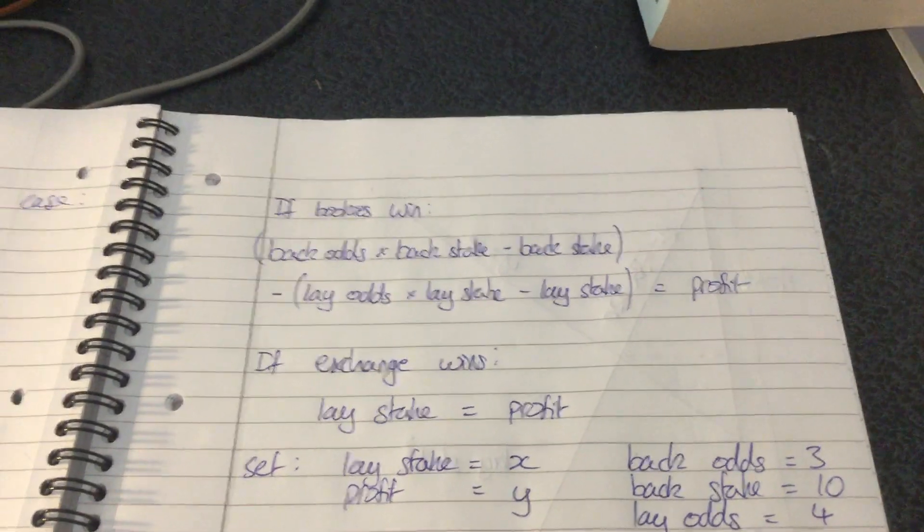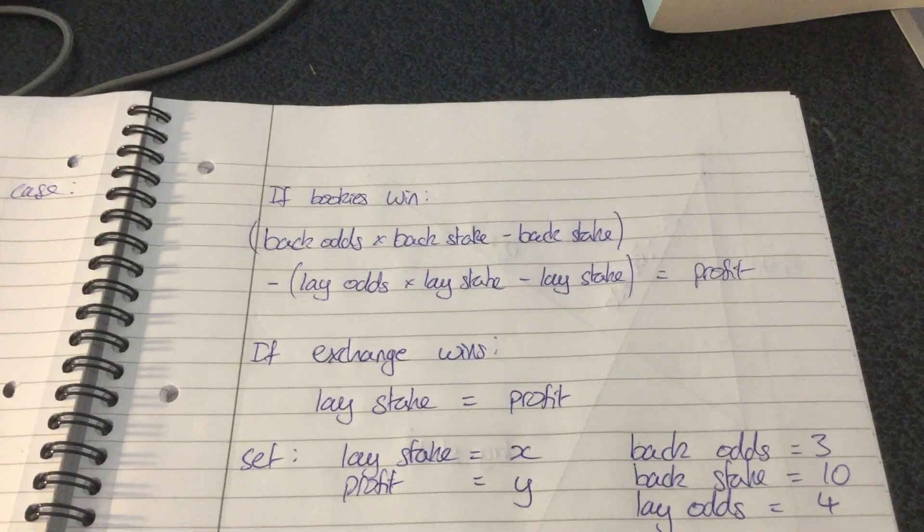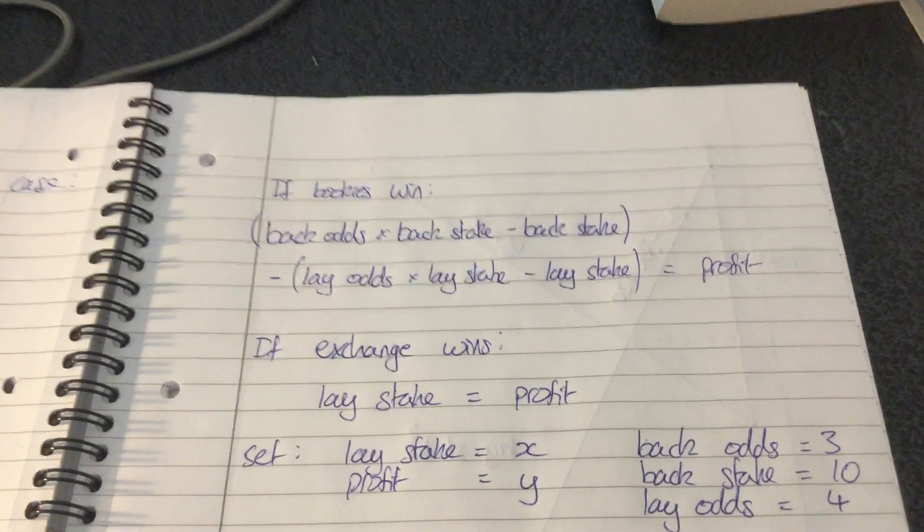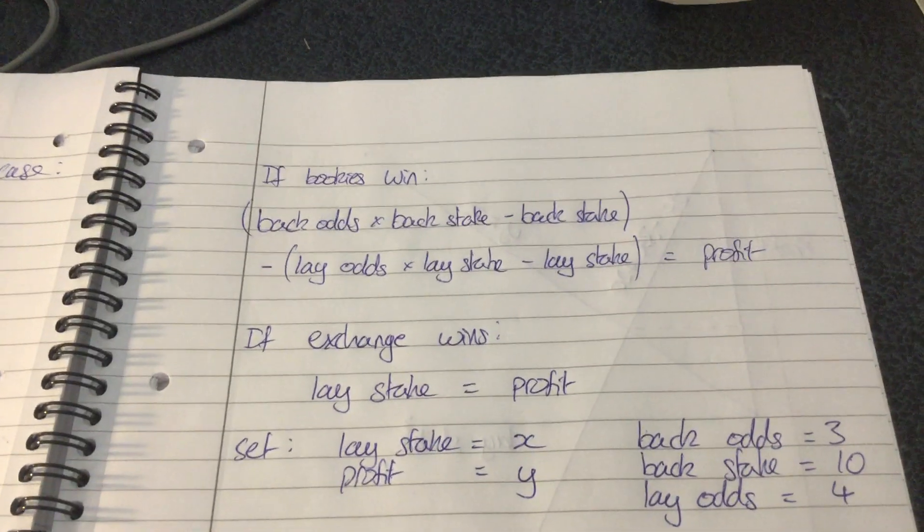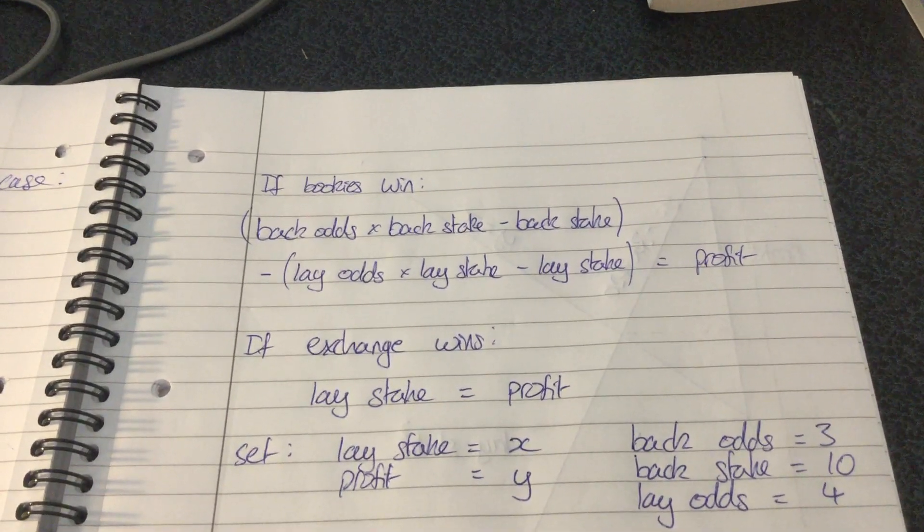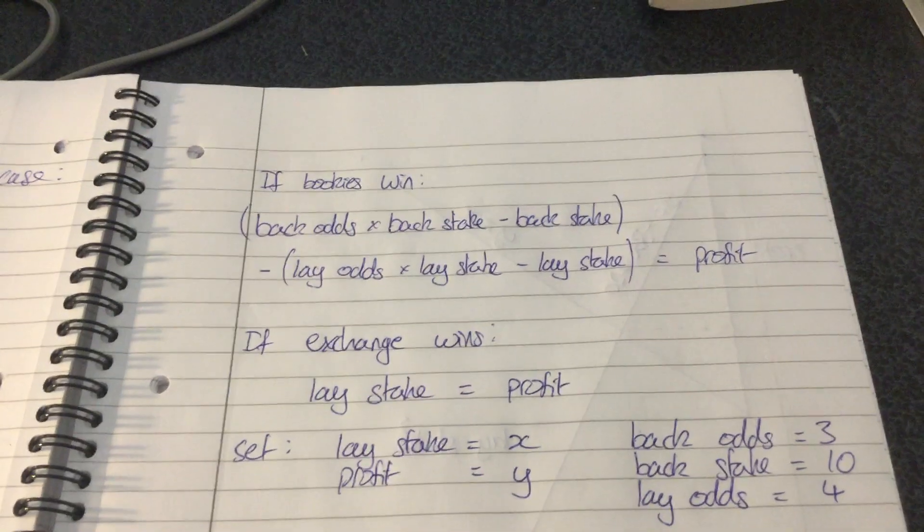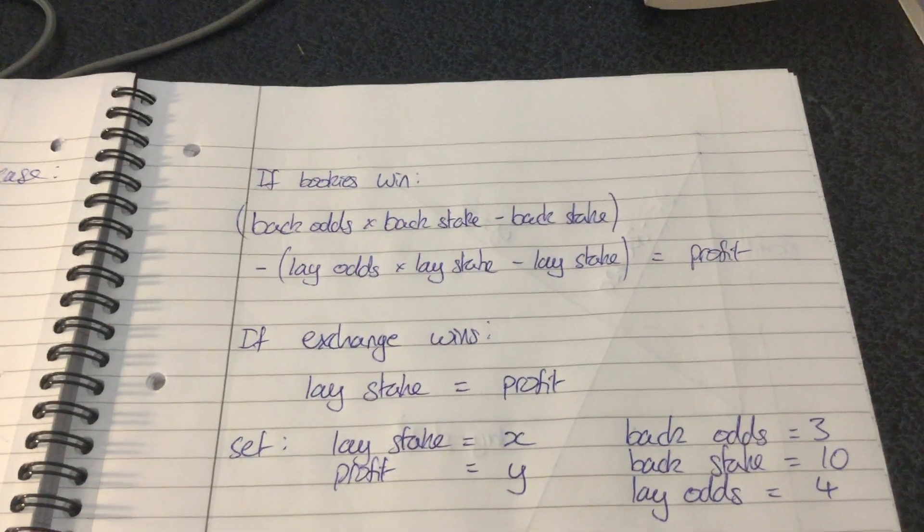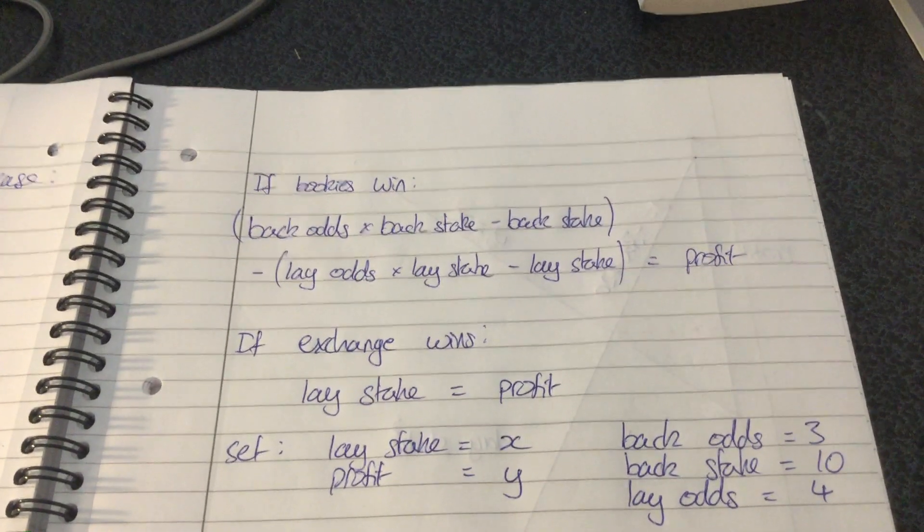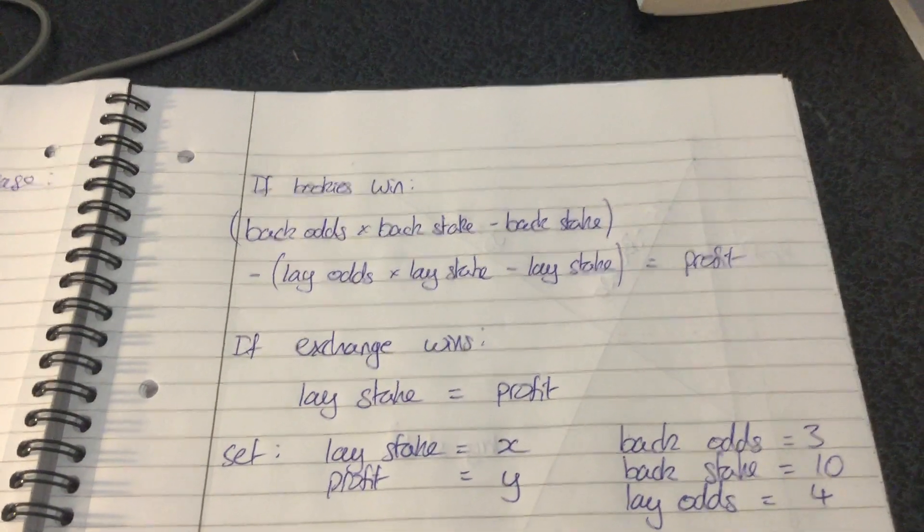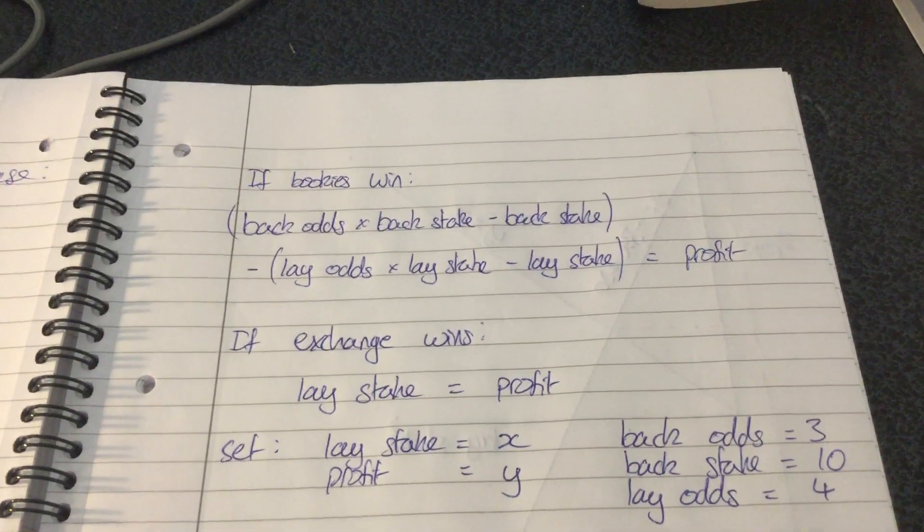If the exchange wins on the other hand, then it's much simpler because if the bookies lose we don't actually lose any money because that was a free bet. So if the exchange wins we have lay stake is equal to the profit. For example, if I put 10 pounds on the exchange then my profit is going to be 10 pounds because I don't lose anything from the bookies.